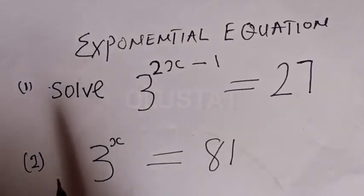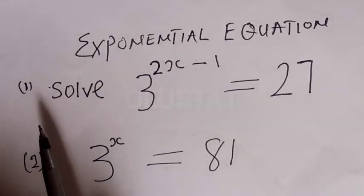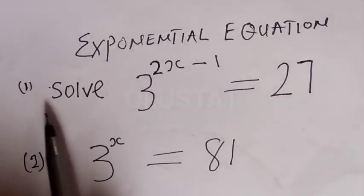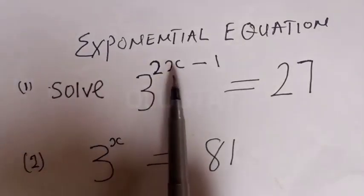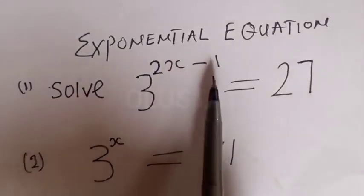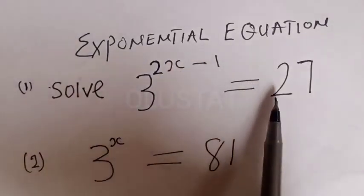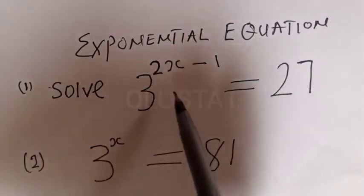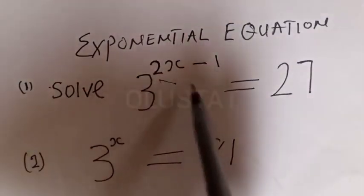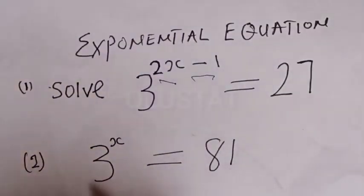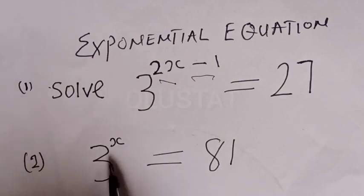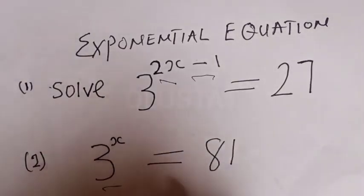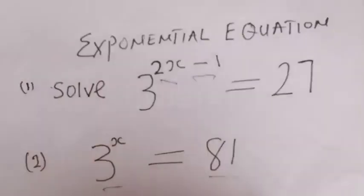Look at the first question. The first question says: solve 3 raised to power 2x minus 1 is equal to 27. The second one says: 3 raised to power s is equal to 81. You have to express it.